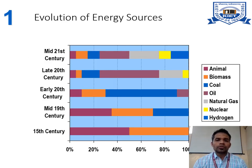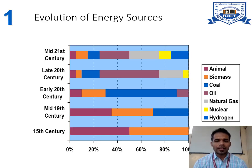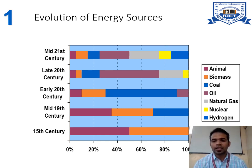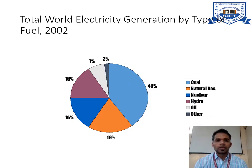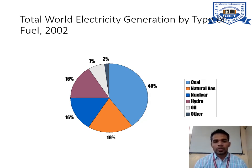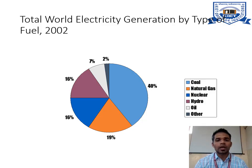Now, the evolution of energy sources. These are the energy sources and their consumption in different centuries. By this graph you can easily understand what happened. On the right side you can see different types of energy sources like animal, biomass, coal, oil, natural gas, etc. For total world electricity generation by fuel in 2002, you can see 40% of electricity was generated by coal alone, 19% by natural gases, and the remaining by other sources. You can visualize how important coal was for generating electricity up to 2002.